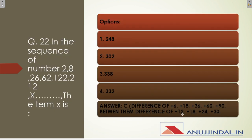Question twenty-two is a number series: 2, 8, 26, 62, 122, 212. The differences are +6, +18, +36, +60, +90. The differences between those differences are 12, 18, 24, 30, 36 — that is, multiples of 6 increasing by 6. So the next difference is 36, giving 212 as a term, and the next number in the series follows accordingly.